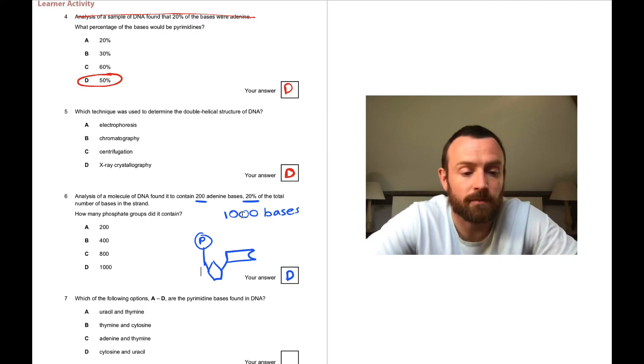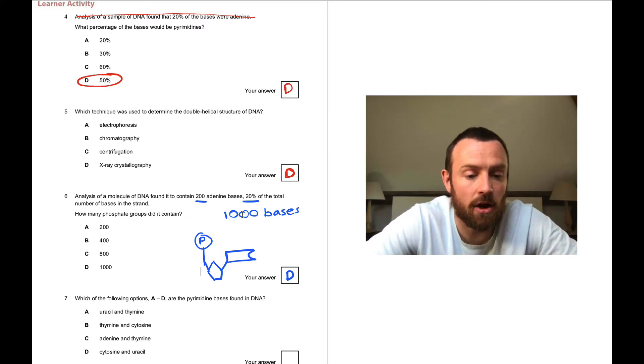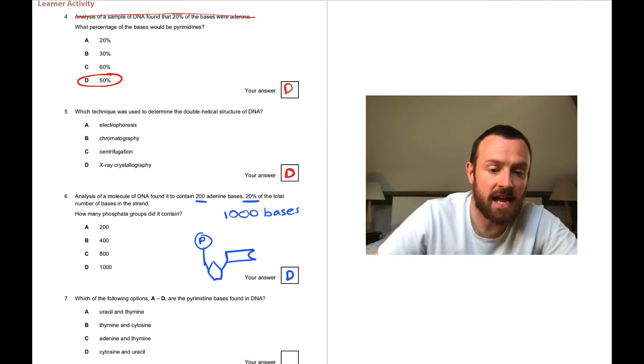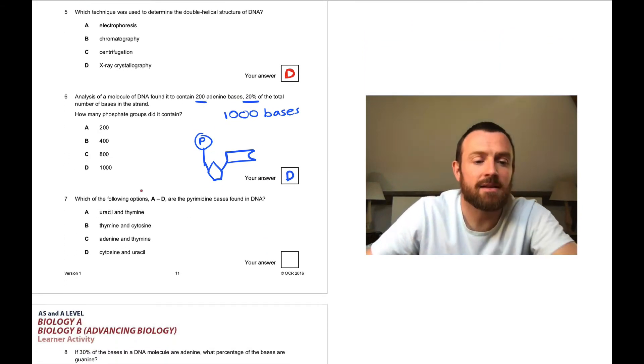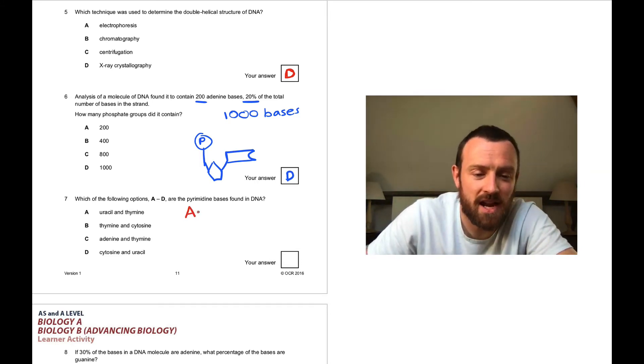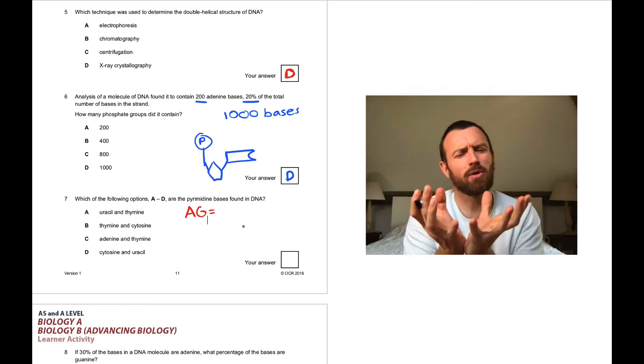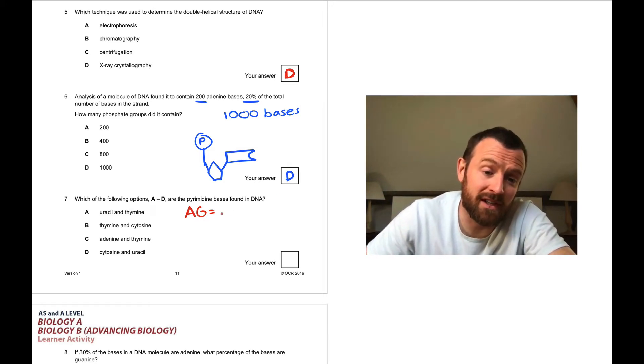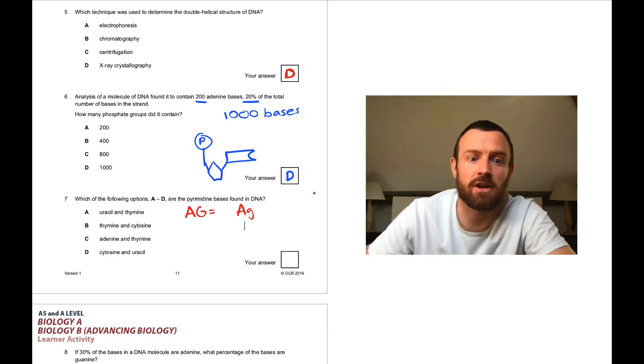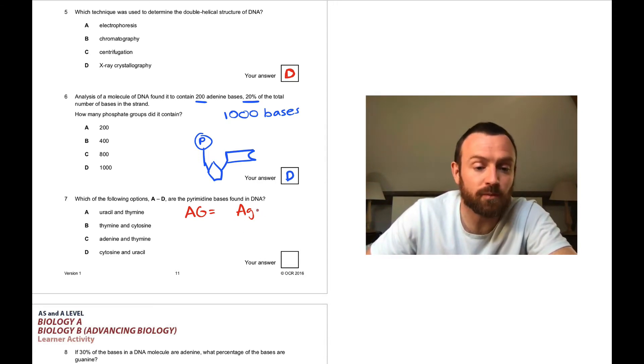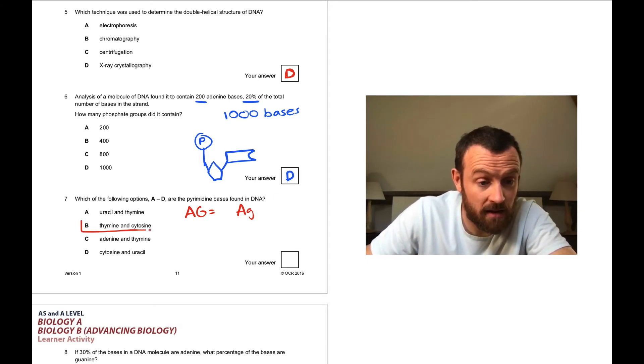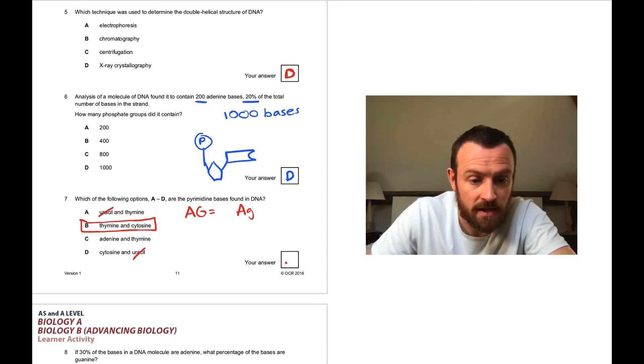Question seven: which of the following options are the pyrimidine bases found in DNA? This is something you've got to memorize. A and G are purines. My science teacher said the phrase 'silver soup tureen,' and silver's chemical symbol is AG, so I remember AG purines. The pyrimidines are therefore C and T. Remember it's in DNA, so uracil is right out because uracil is in RNA. So it's B.